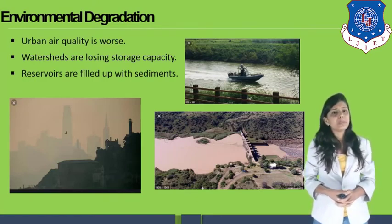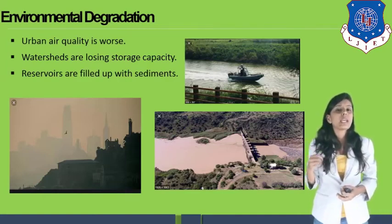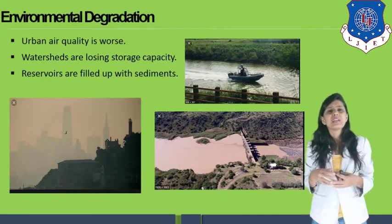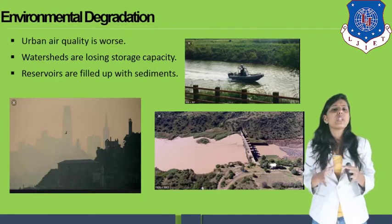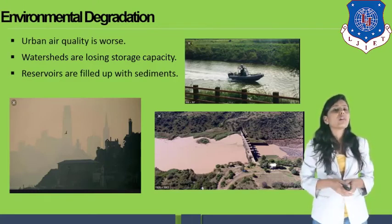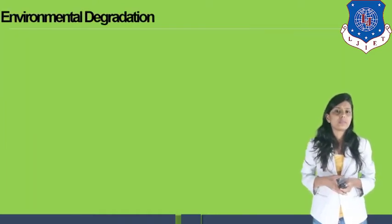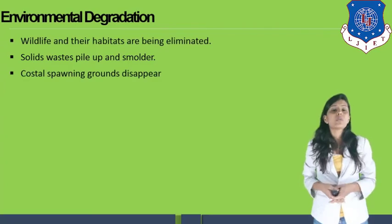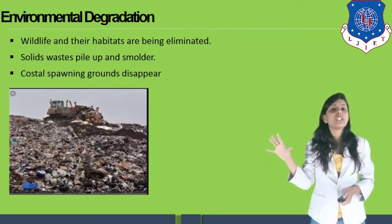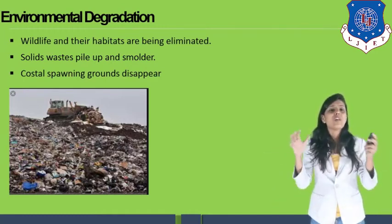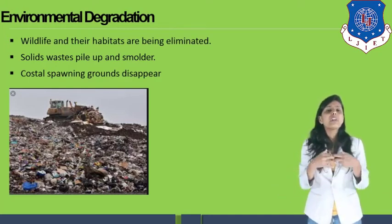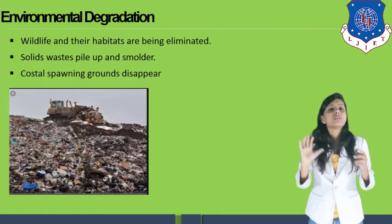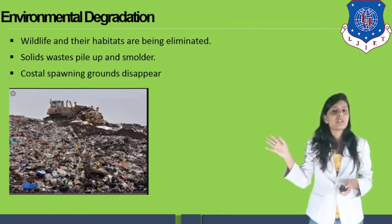Pollution is caused by industry and human beings. Watersheds are losing storage capacity because of drought in some areas. Reservoirs are filled up with sediments — they are filled with waste, plastic, and other elements that we throw into water. All these elements gather in the water and degrade the quality of the environment. You can see in the figure how solid waste is gathered at one place; this pile of waste releases a lot of dangerous gases into the atmosphere.